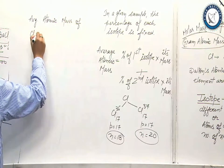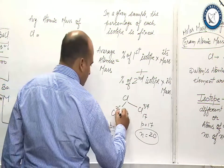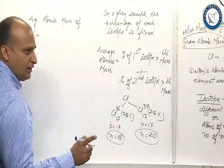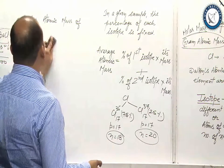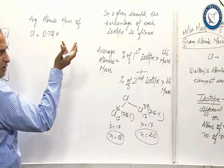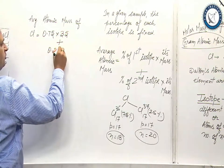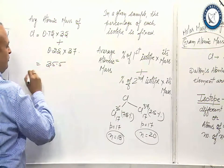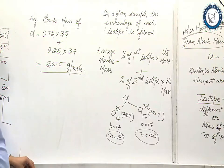So average atomic mass of chlorine is equal to percentage of first isotope, this is 75%, this is 25%. Now see, you can write it in two ways. Either you can write 75 by 100, that is your choice. I prefer to write 0.75. It is your wish. Plus 0.25 into 37. On solving you get 35.5 gram per mole. This is the average atomic mass of chlorine.